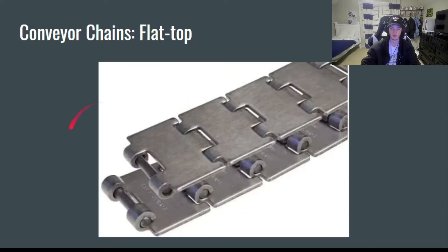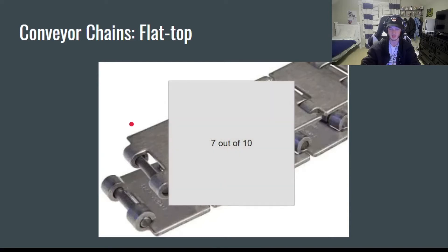Moving on to the conveyor chains here, we got the flat top chain. You can probably guess why it's called the flat top chain. Yep, it's got a flat top. There's not much to say about these. They got these little barrels on the end of them that are curled with pins on each side, and they're conveyor chains. They move stuff. Give that a 7 out of 10.